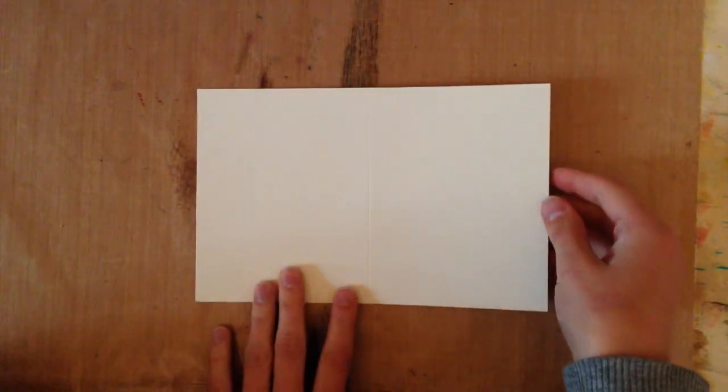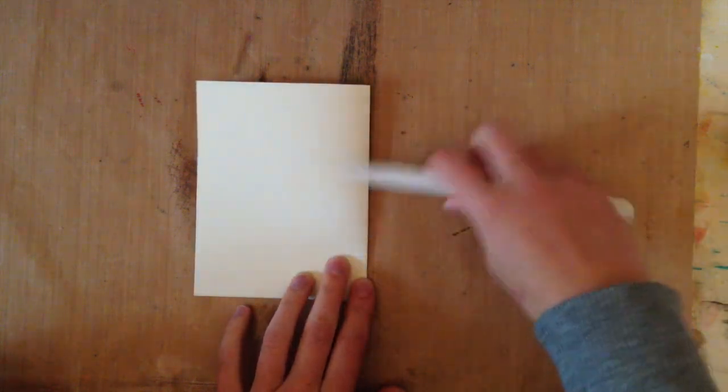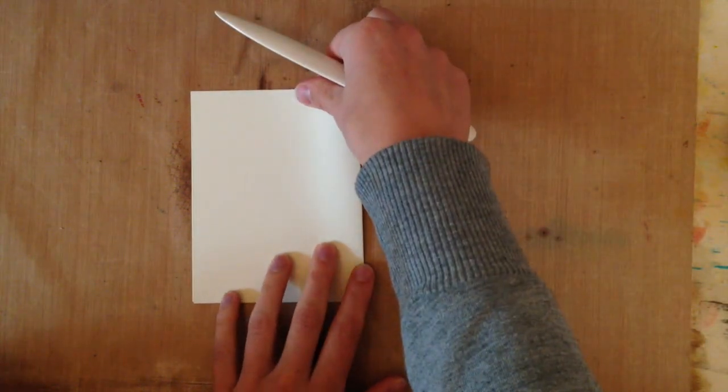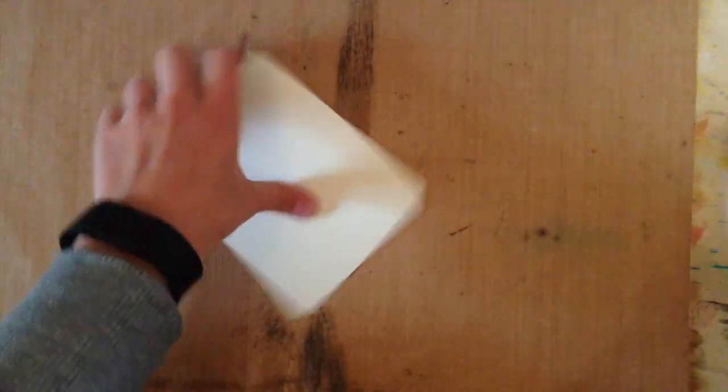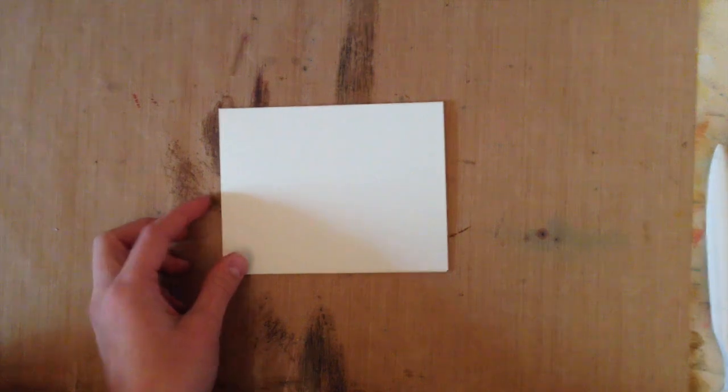I'm starting off with a piece of Colonial White cardstock. It measures 8.5 by 5.5 inches and then I folded it at 4.25 inches to make a top folding horizontal card or landscape.